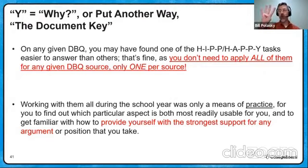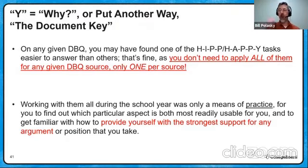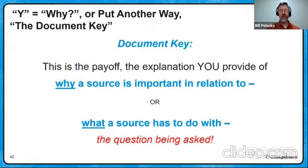You don't need to apply all four. That would be H-I-P-P or H-A-P-P times seven documents. You don't have to do 28 things. You just need one of these aspects, one variable per document.